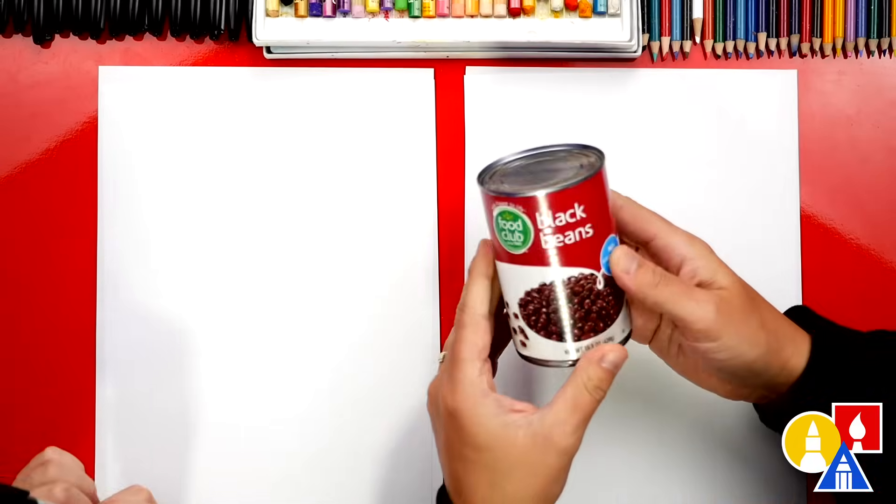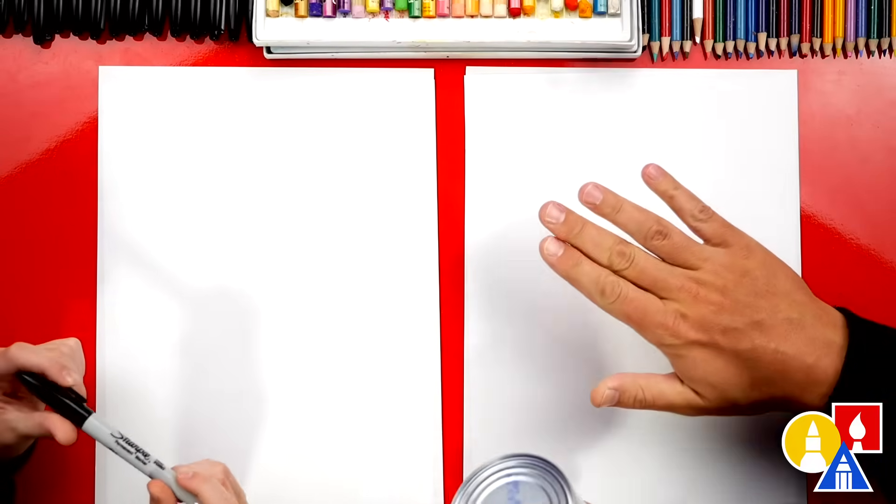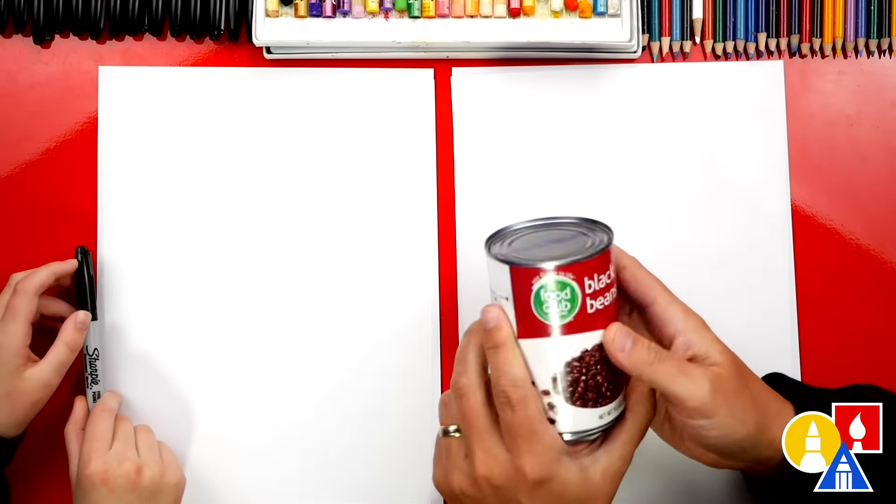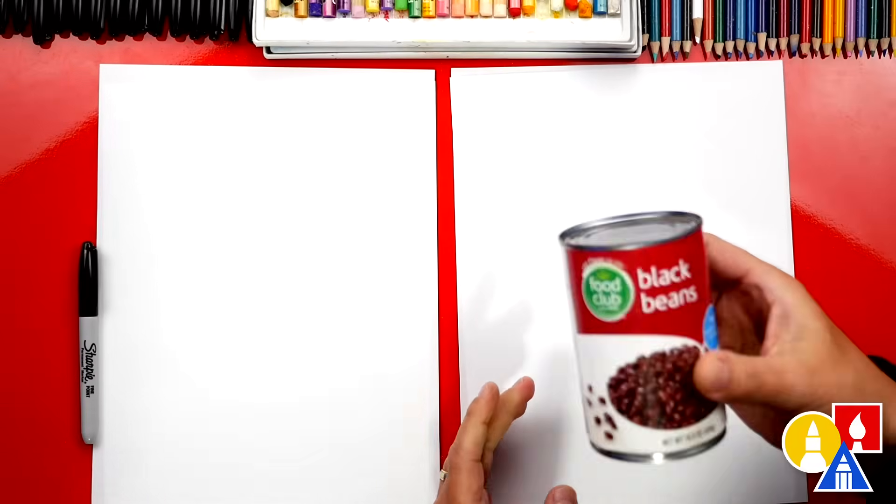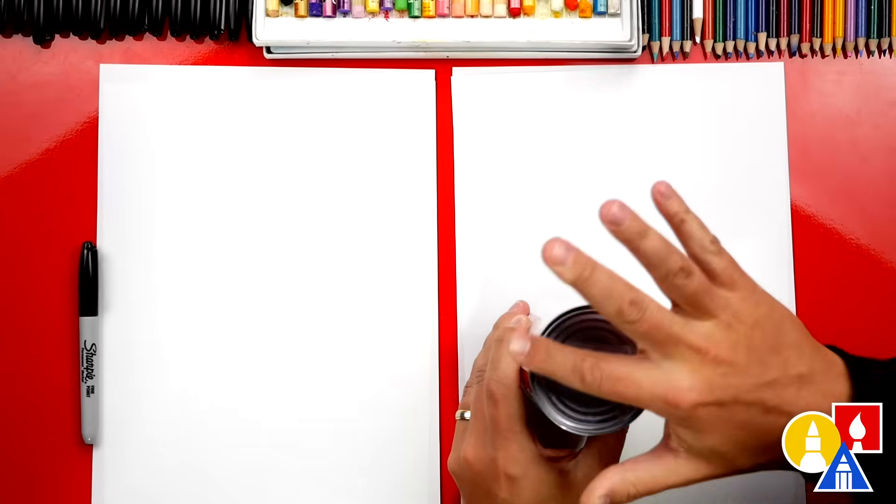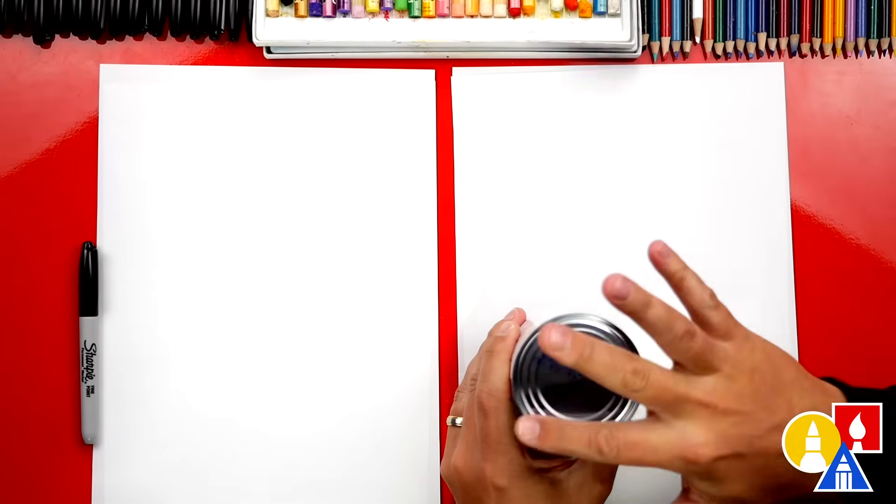Yeah, we're gonna draw a three-dimensional object like this can on our paper, but it's flat, which is 2D. But we're gonna try to make it look 3D, like it's popping out of our paper. So what's the top shape? A circle. Yeah, this is a circle. It's flat.